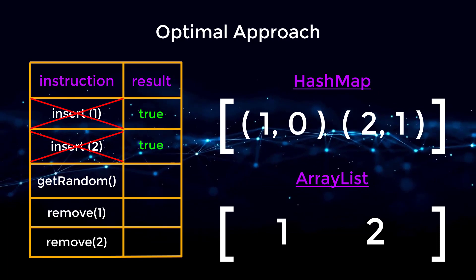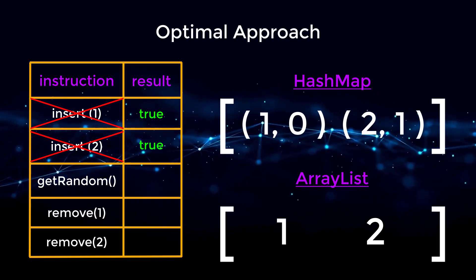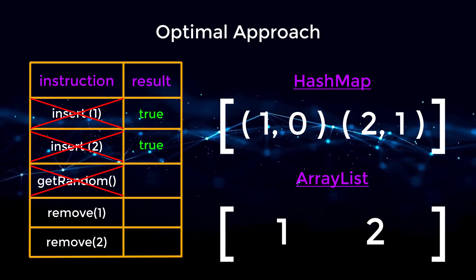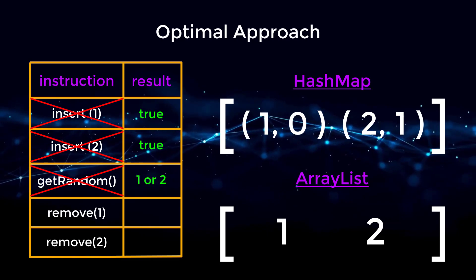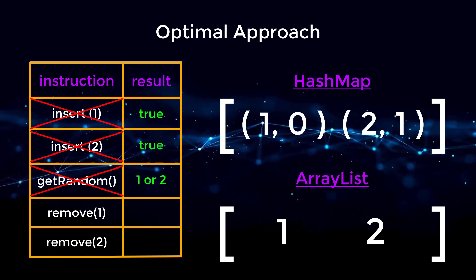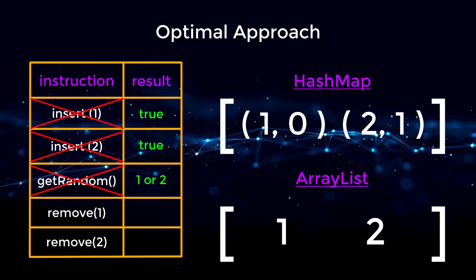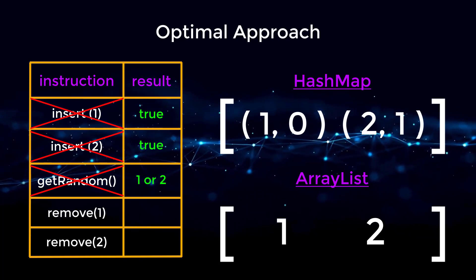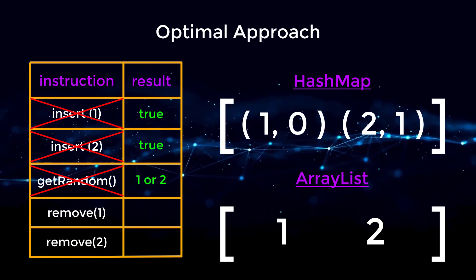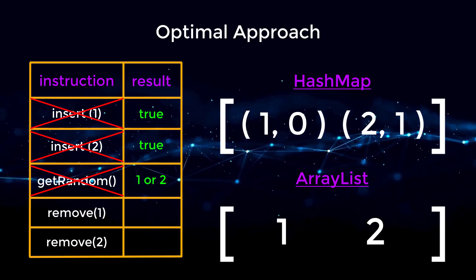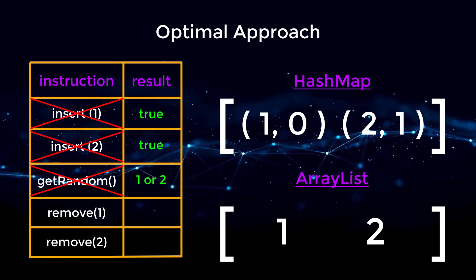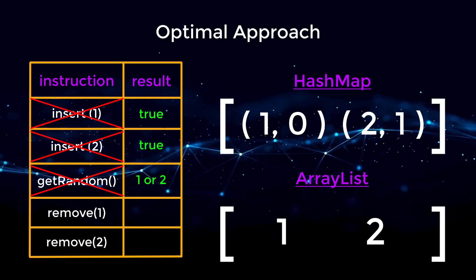Now let's execute the instruction get random. This can return either one or two since they both have equal probability. Since we know the length of our list, we can use a random number generator between zero inclusive and our list size exclusive.